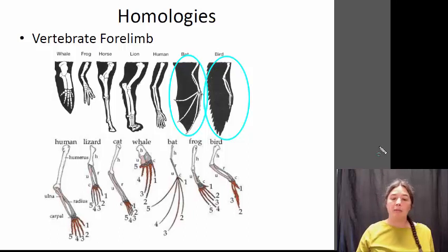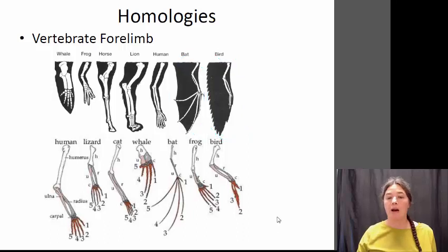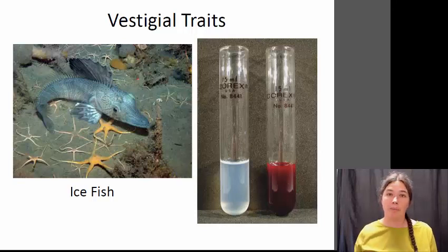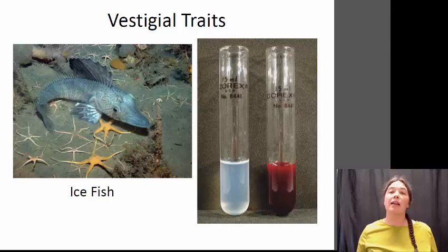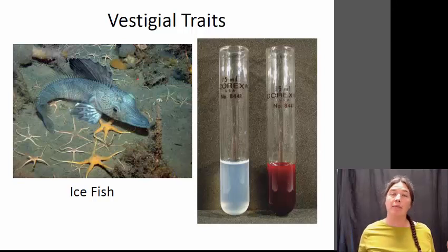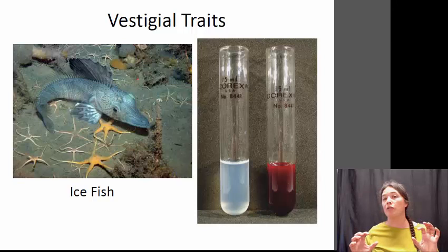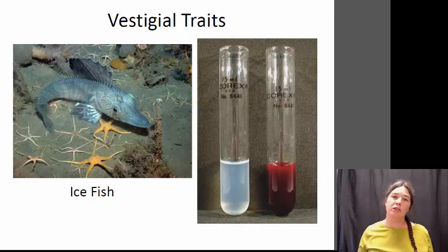Sometimes these homologies arise in scenarios where the particular trait no longer serves a function in the current animal. One great example is the pelvis bones of the whale. Whales evolved from an animal that had pelvis bones, and gradually over time the hind limbs became not useful because they're aquatic. Gradually those hind limbs got smaller and smaller, but whales still have these remnants of the pelvis bone. Those pelvis bone remnants don't really serve any function anymore, so we would call them a vestigial trait.